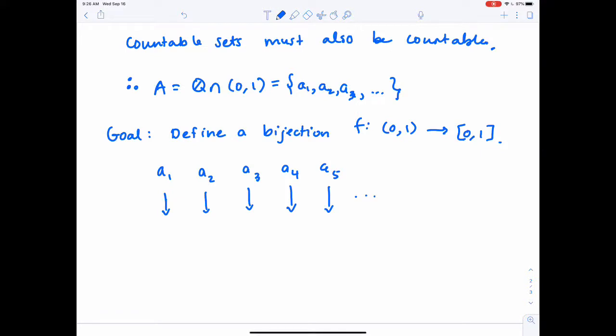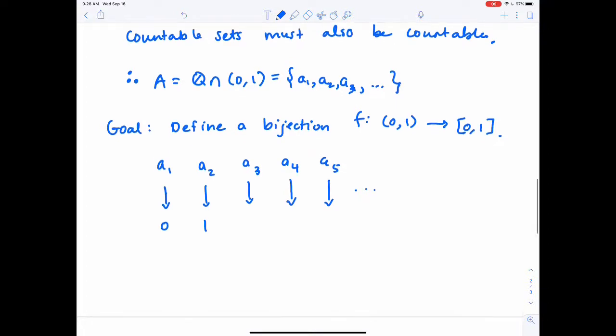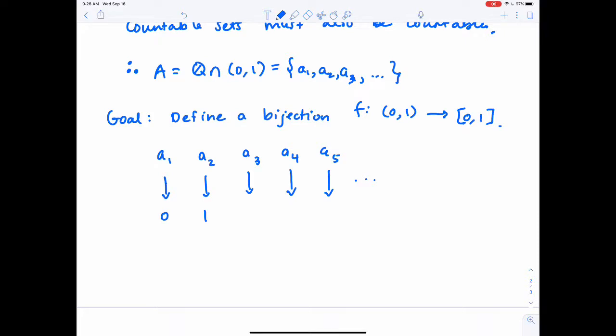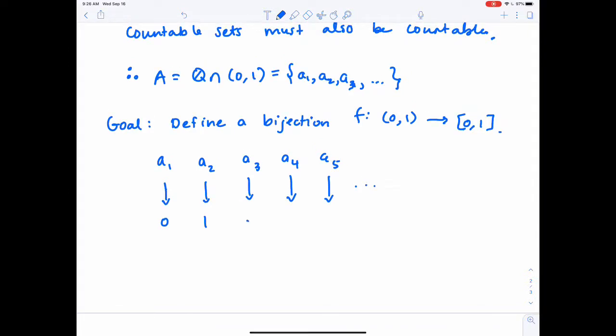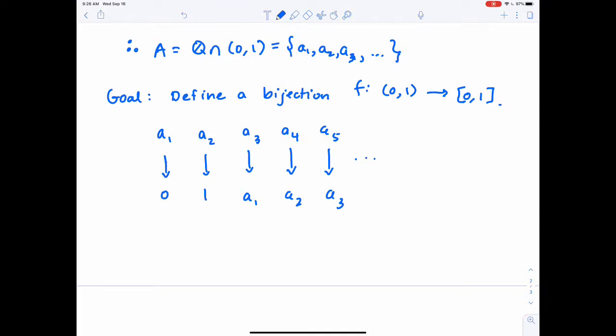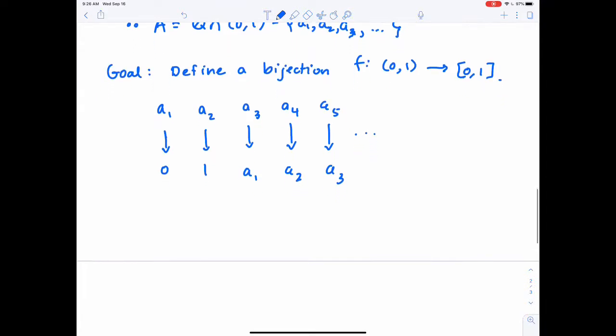Well, remember what we did before. We said take your new numbers that you need to hit in your codomain, so 0 and 1 in this case. And then if you want to make sure that all of the A's are still hit under this, because remember these A's are numbers in the interval (0,1), and so they need to be outputs under this map if I'm going to have an onto map. So I'm going to send A₃ to A₁. A₄ goes to A₂. I'm basically just covering my tracks. So I'm borrowing A₁ and A₂ to hit those new points. And then I'm shifting my list over and continuing to enumerate so that I still hit everything.